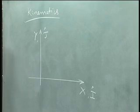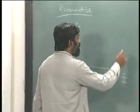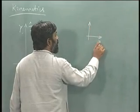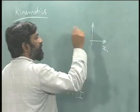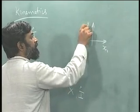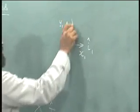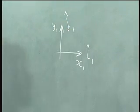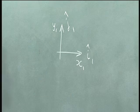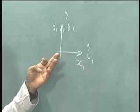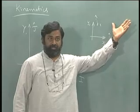Now there may be many either translating or rotating frames of reference. Let me call this as x1, y1 — I can say i1, j1. There could be a rotating plus translating frame of reference with respect to which something else may be defined.